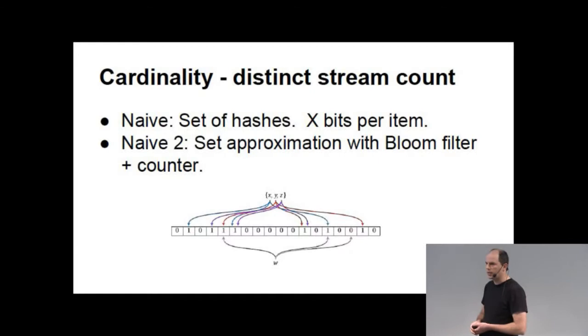But you can't count the number of items that you put in the bloom filters. Therefore, you keep a counter on the side and for each item coming by, you see, is this in the bloom filter? No, I up my counter. Fine, very straightforward, much more compact than the set of hashes.